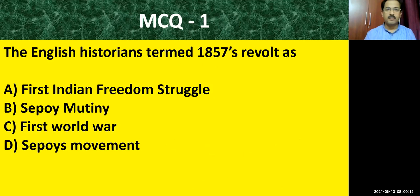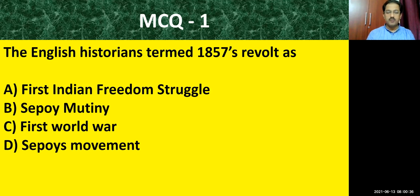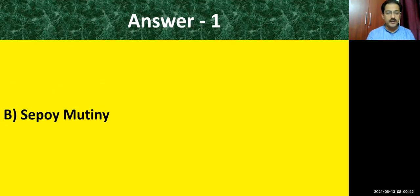MCQ question number one: the English historians termed the 1857 revolt as — what did they call it? The options are: first Indian freedom struggle, Sipai mutiny, first world war, Sipai movements. The correct answer is: English historians called the 1857 revolt as Sipai mutiny. They did not want to give us any credit of first war or first independence war in India, so they just termed it Sipai mutiny.